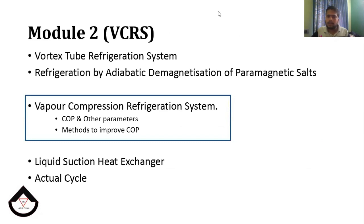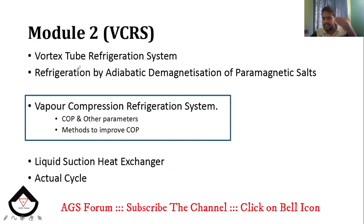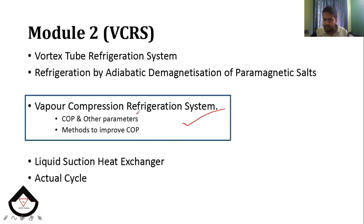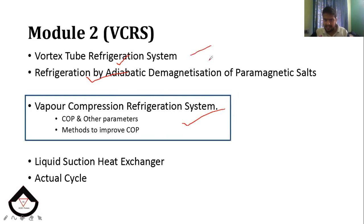The next section is the Vortex Tube Refrigeration System. Also covered is Adiabatic Demagnetization of Paramagnetic Salts. This is a theory section — we need to understand the concept.